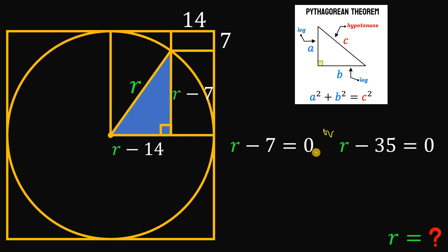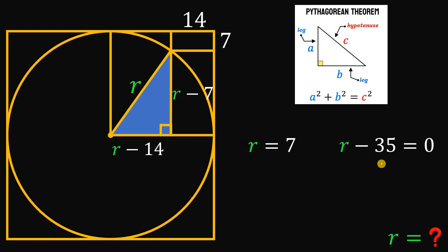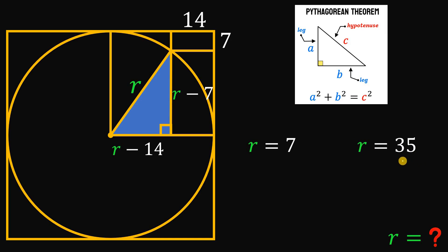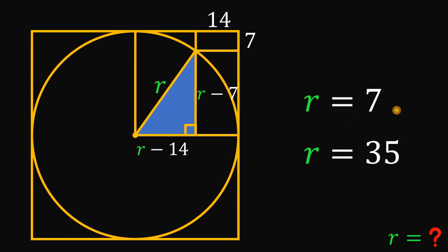Solving the first equation by adding 7 to both sides gives r equals 7. Solving the second equation by adding 35 to both sides gives r equals 35. So we have two possible values: r equals 7 or r equals 35.